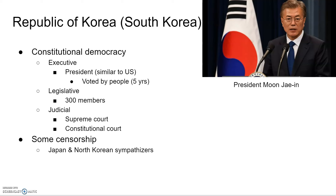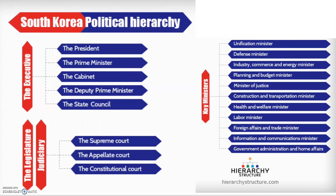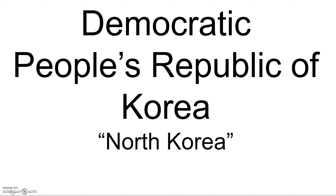South Korea has a judicial branch with a Supreme Court and a Constitutional Court. An interesting thing is that South Korea does have some censorship — they censor a lot of pro-Japanese and North Korea sympathizers, considering their history. The executive branch has all the members and the cabinet, the legislative branch includes the judiciary alongside it, and key ministries fall underneath the executive branch through the cabinet.